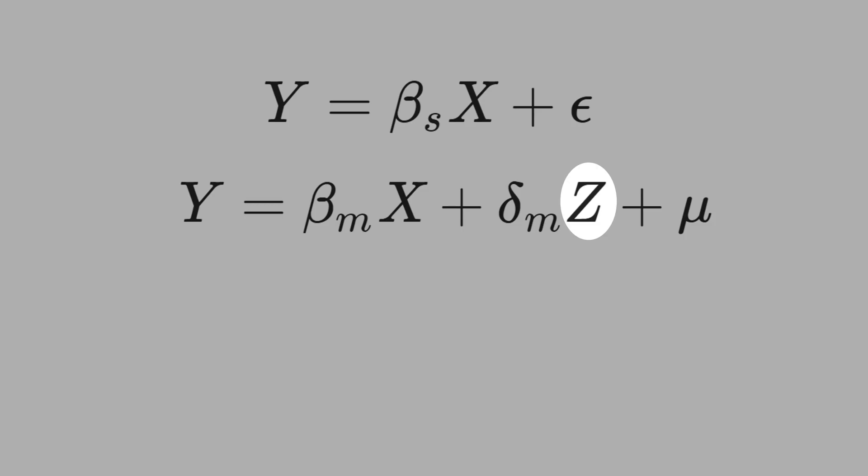If you control for Z, the coefficient of X, beta_m, will be unbiased.